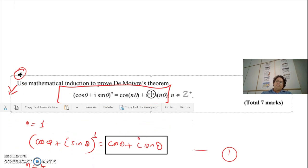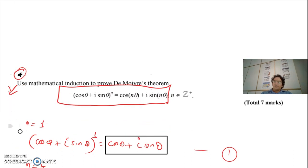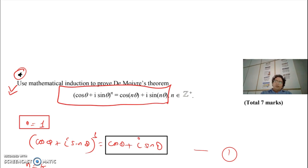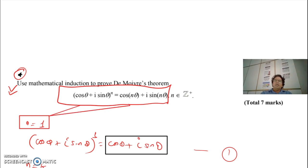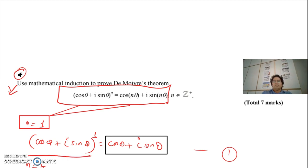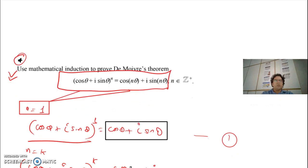Now taking the first step of the complex number induction — as we always prove for n equals 1, I take n equals 1 on the left-hand side as well as the right-hand side. Both sides give the same answer, which means it is true for n equals 1.